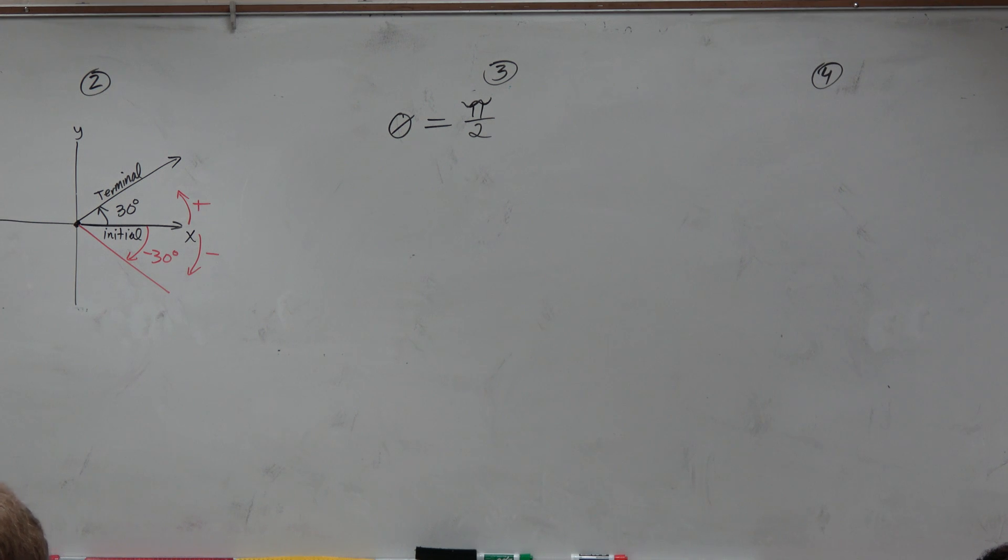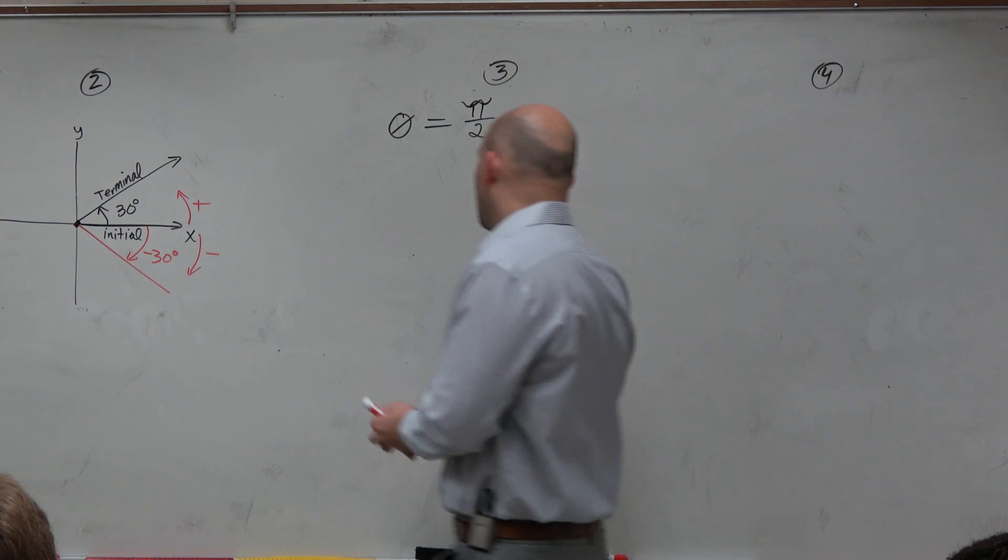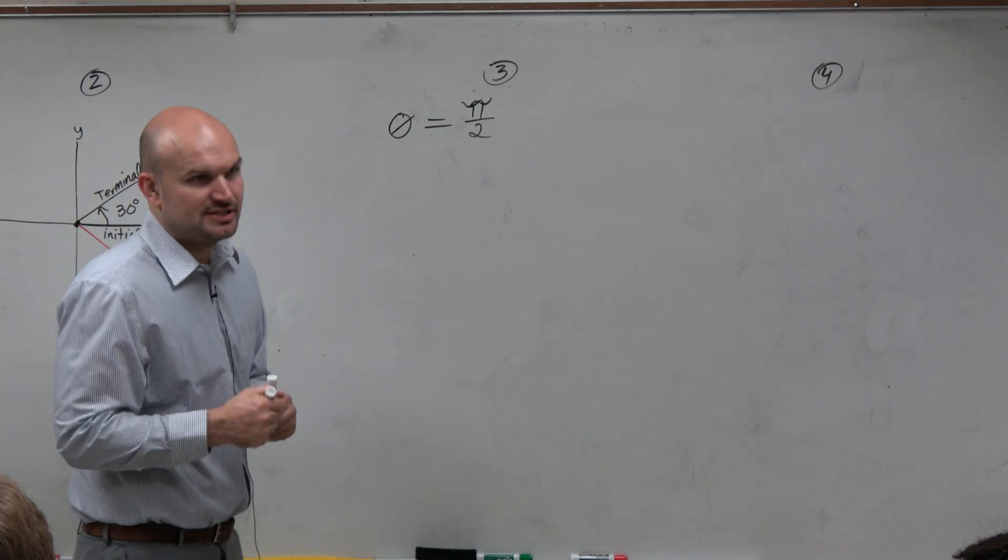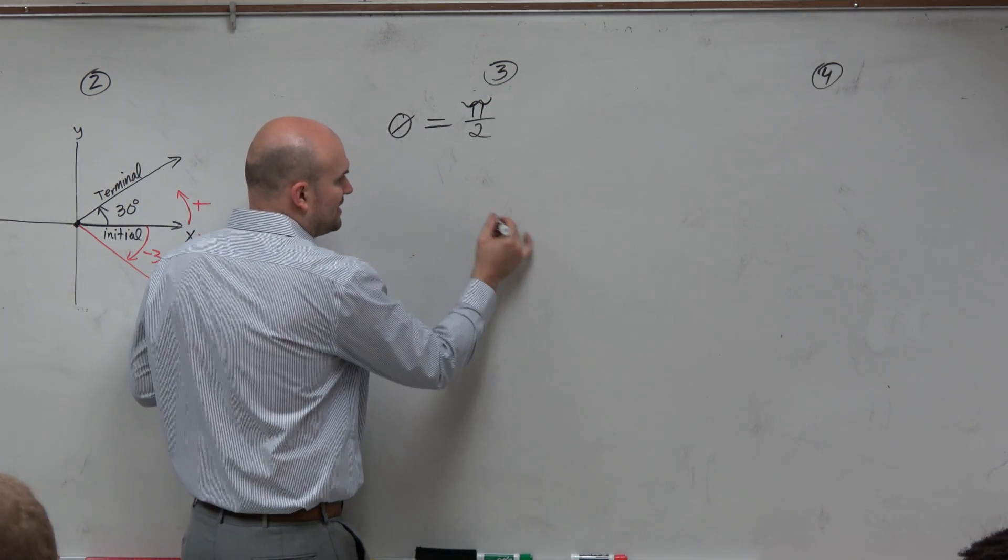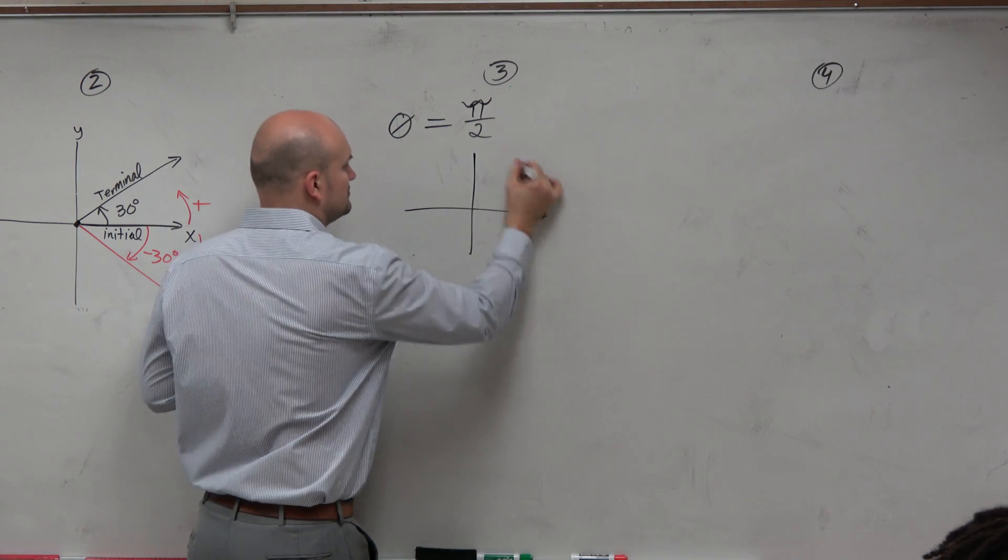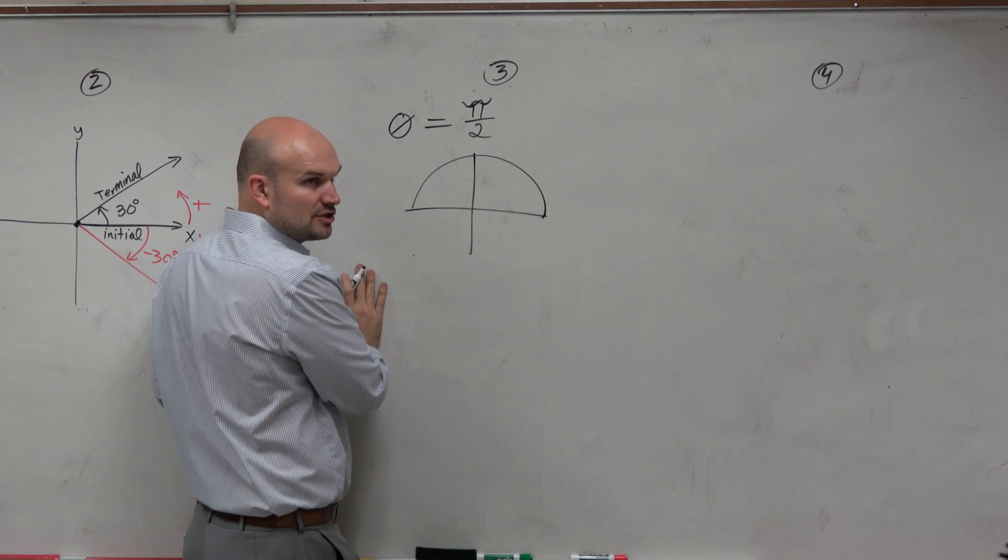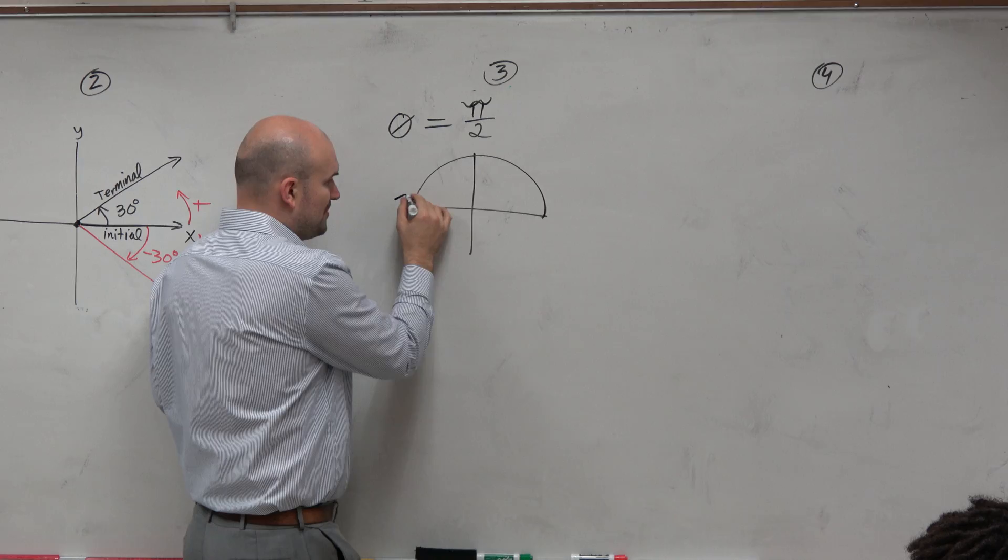So to identify the coterminal angles, the first thing we want to do is identify what the angle looks like. Let's go with our understanding of pi. We know that pi is basically halfway around a circle, right? That represents pi.